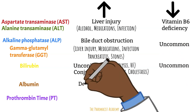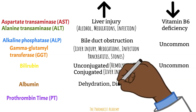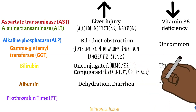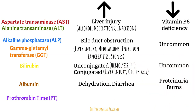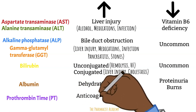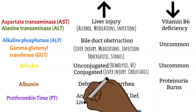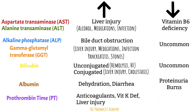Patients with high albumin may have dehydration or diarrhea, and patients with low albumin may have proteinuria, burns, or if the body is undergoing a lot of stress and inflammation. Lastly, if a patient's blood is taking too long to clot, it may be due to the use of anticoagulants, vitamin K deficiency, bleeding, or liver injury preventing it from making clotting factors. Low prothrombin time is not something we see often in clinical practice, so we will skip that.